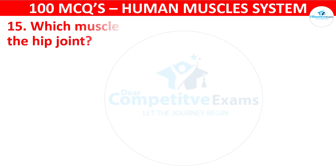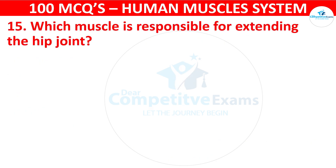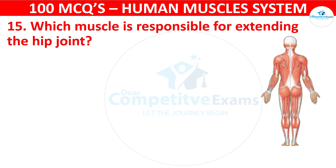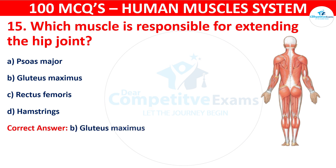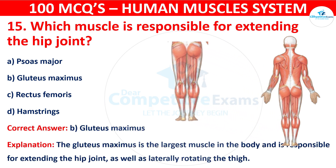Question number fifteen: Which muscle is responsible for extending the hip joint? Your options are: Psoas major, Gluteus maximus, Rectus femoris, or Hamstrings. The correct answer is B, that is gluteus maximus. The gluteus maximus is the largest muscle in the body and is responsible for extending the hip joint as well as laterally rotating the thigh.